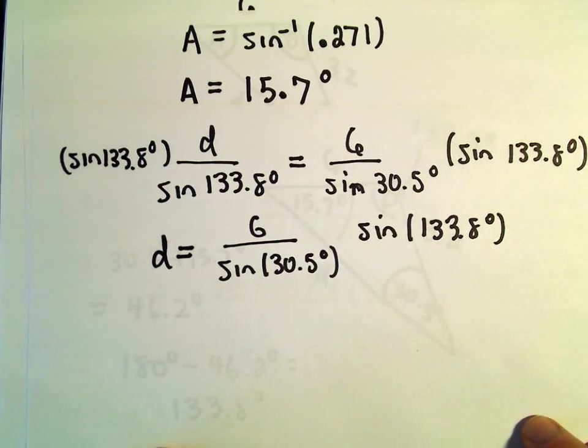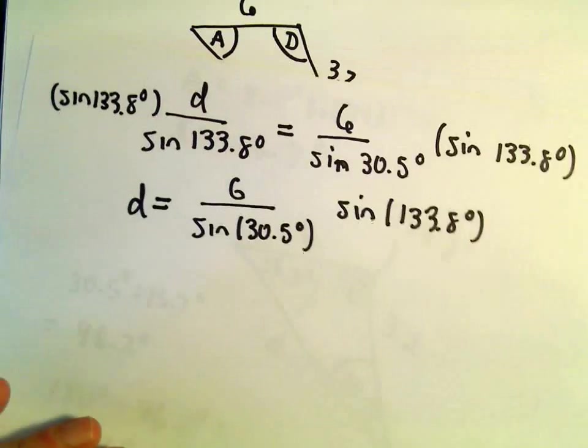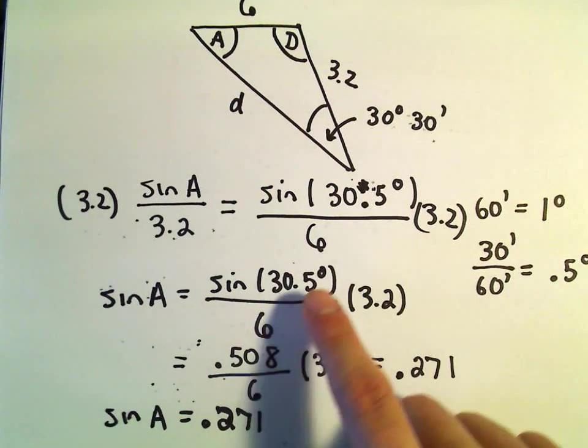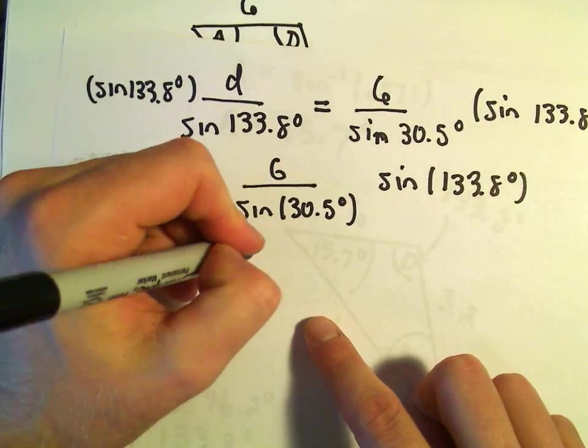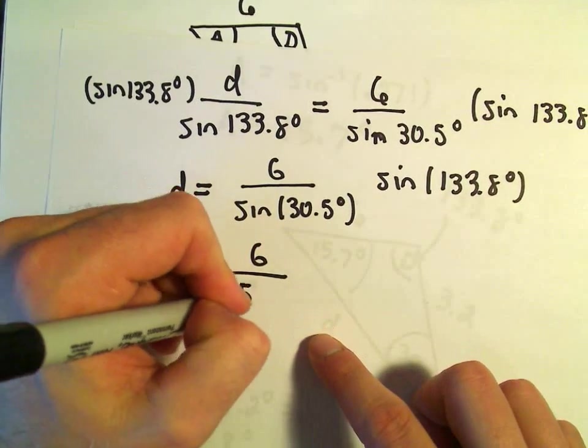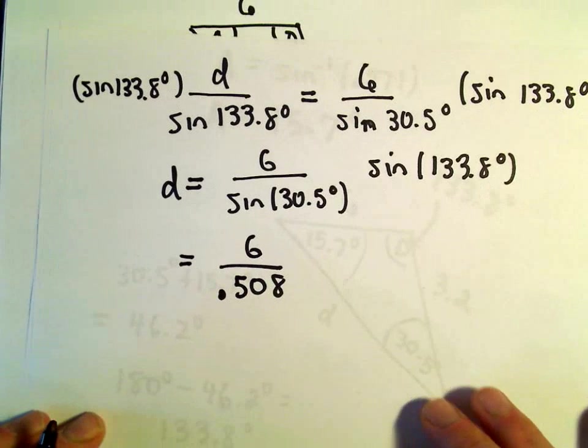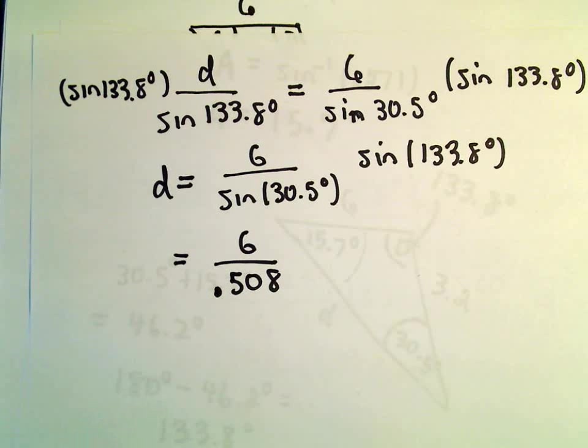So on the left side, we'll just be left with our value for D. We'll have 6 over sine of 30.5 degrees times sine of 133.8 degrees. We said sine of 30.5 degrees, that was .508.